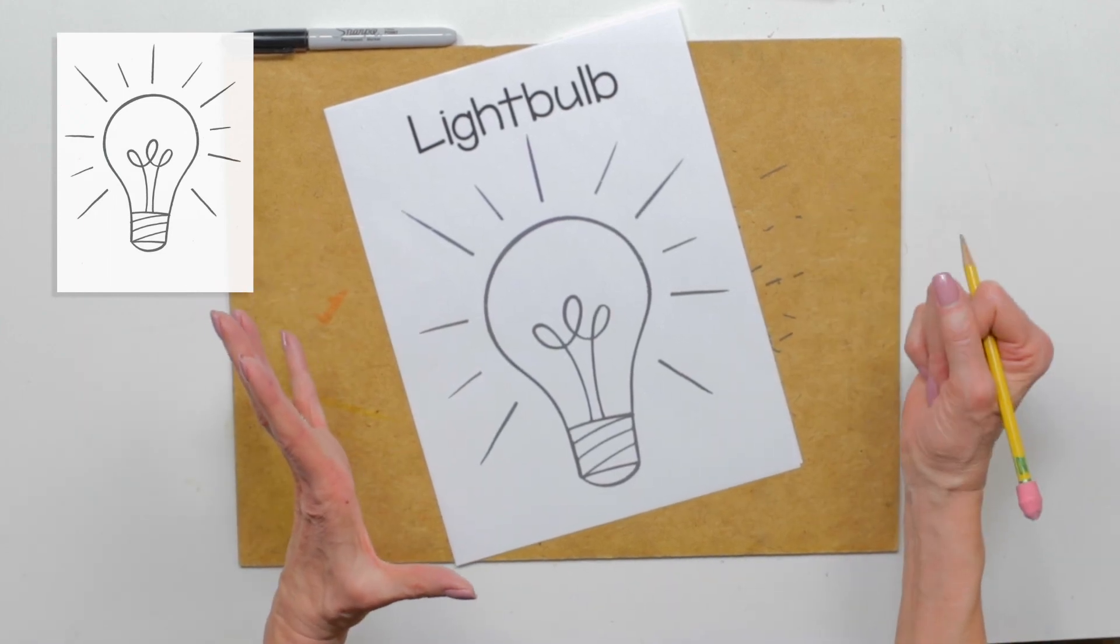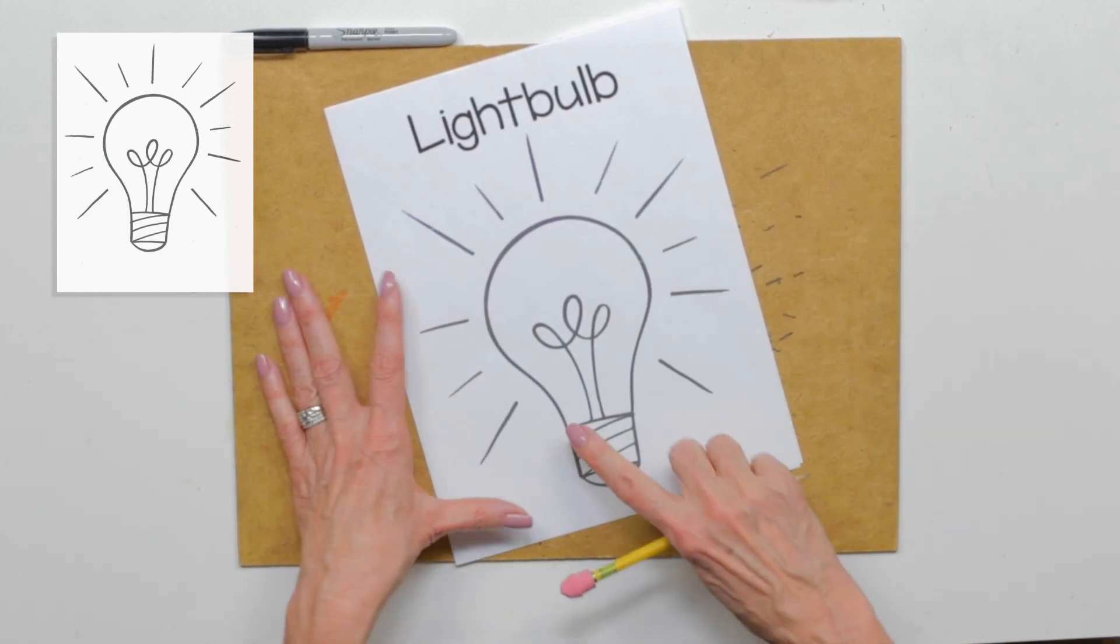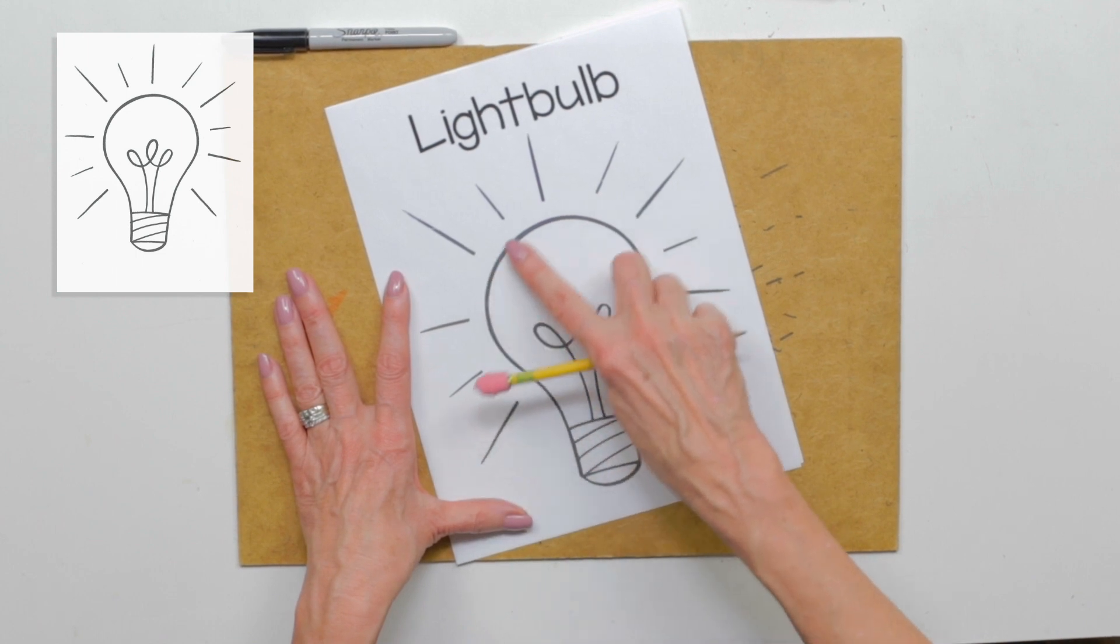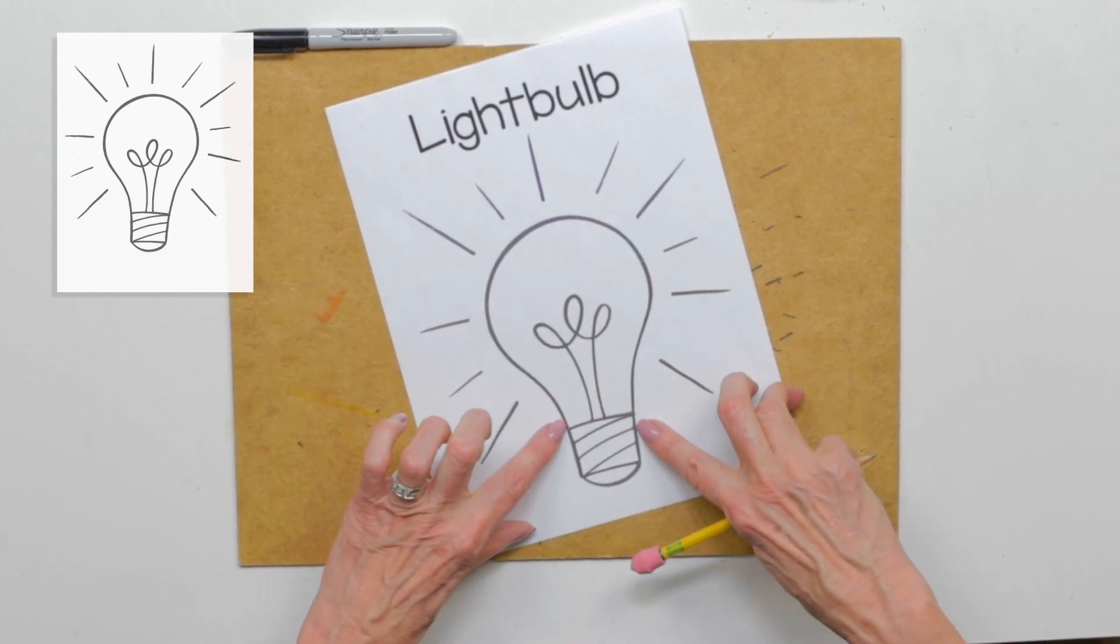Look at our lightbulb we're going to draw today. It's kind of rounded at the top but comes down into a little bit of a rectangle.